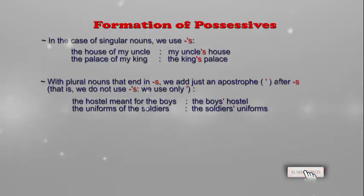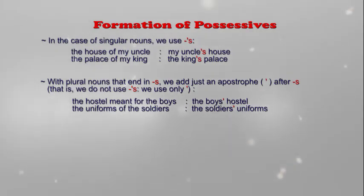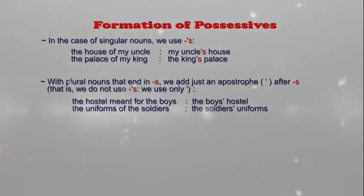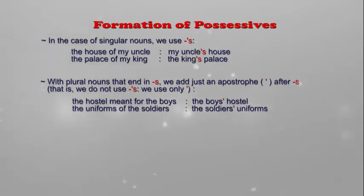Second sentence: 'the uniforms of the soldiers'. We are talking about the soldiers' uniforms. So in the possessive form, it becomes 'the soldiers' uniform'. The noun 'soldiers' is in the plural form and already ends with s, so we just add an apostrophe.